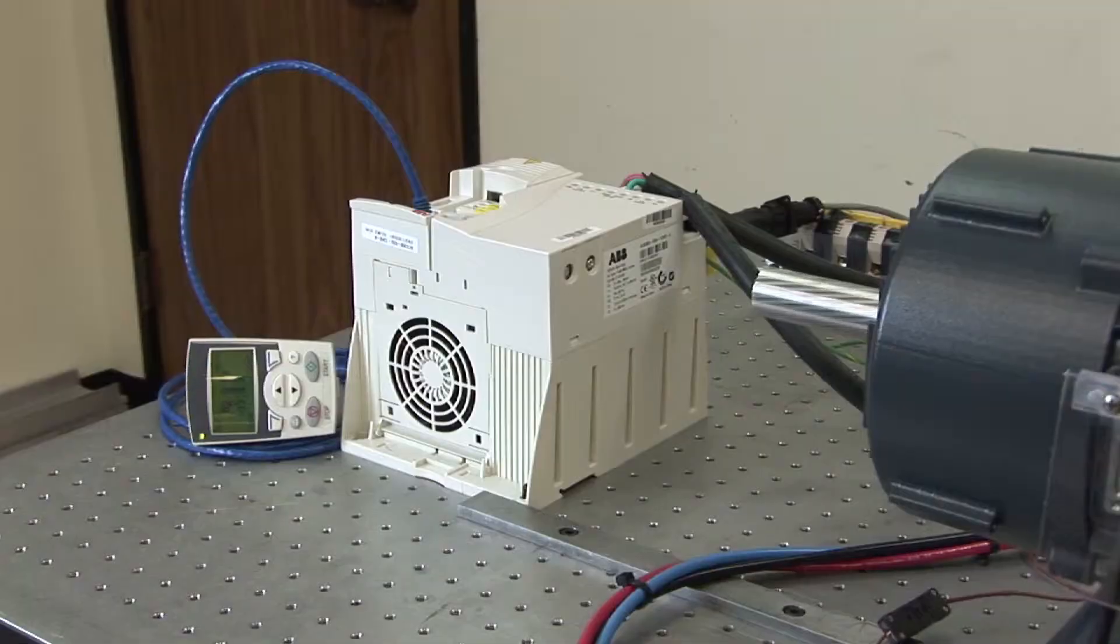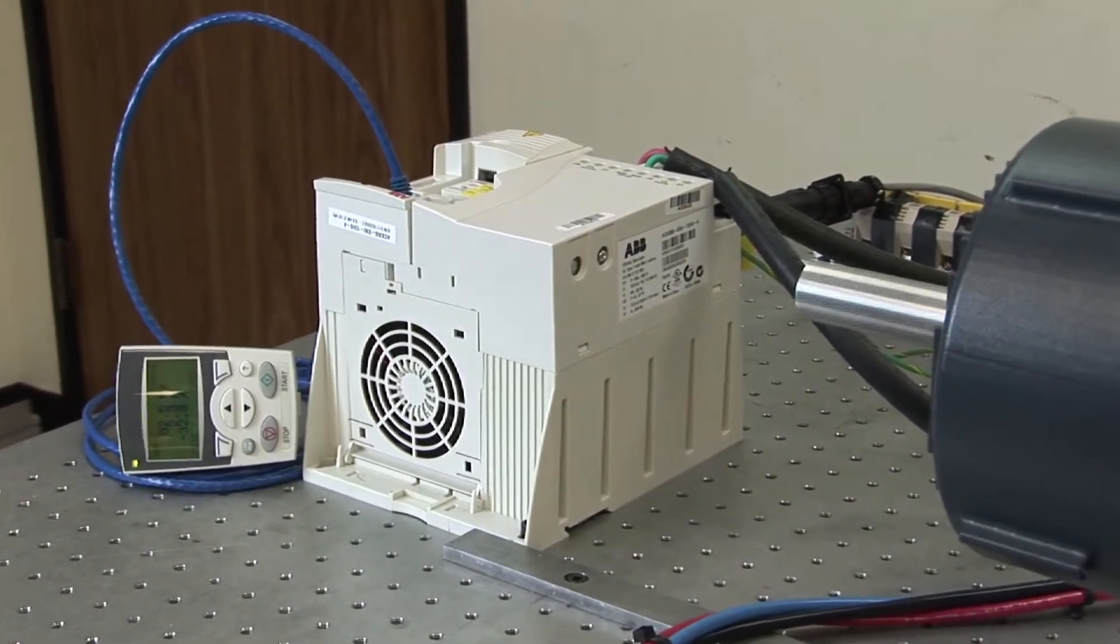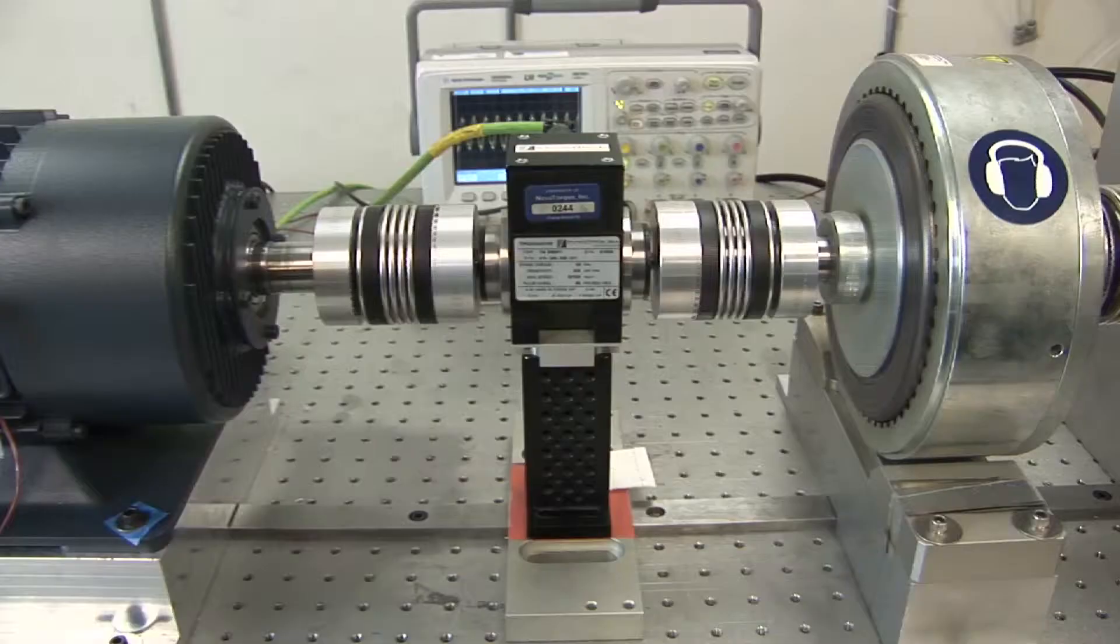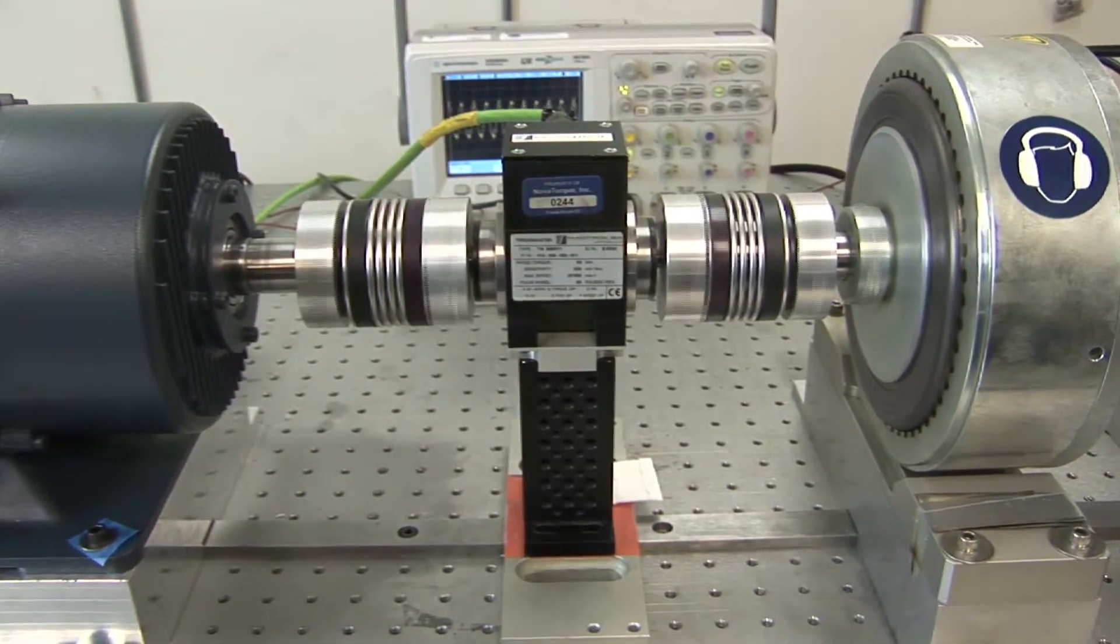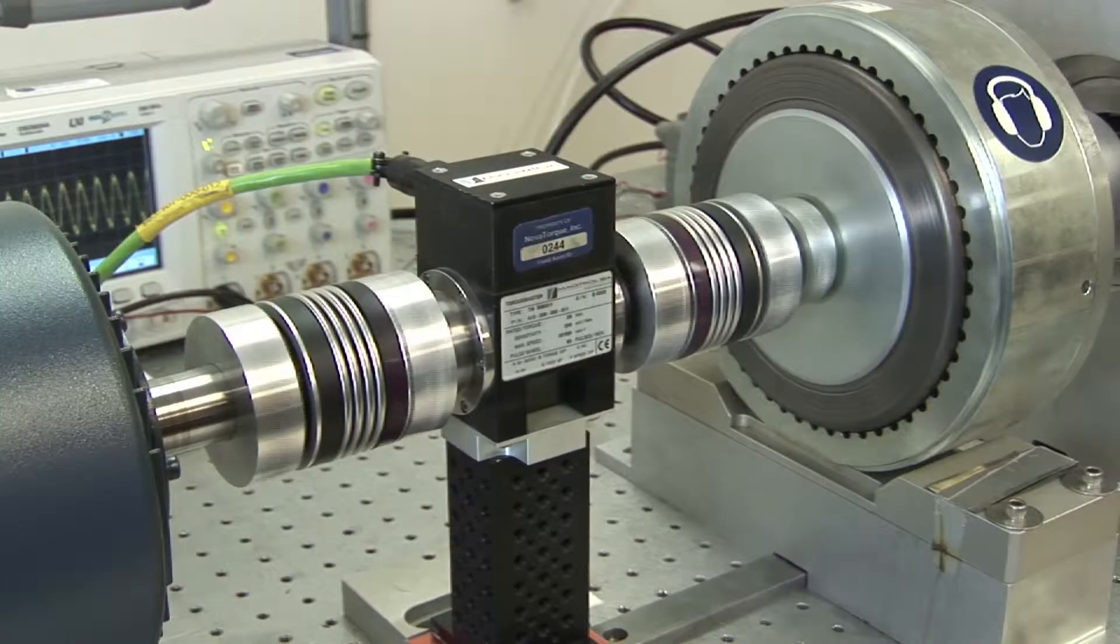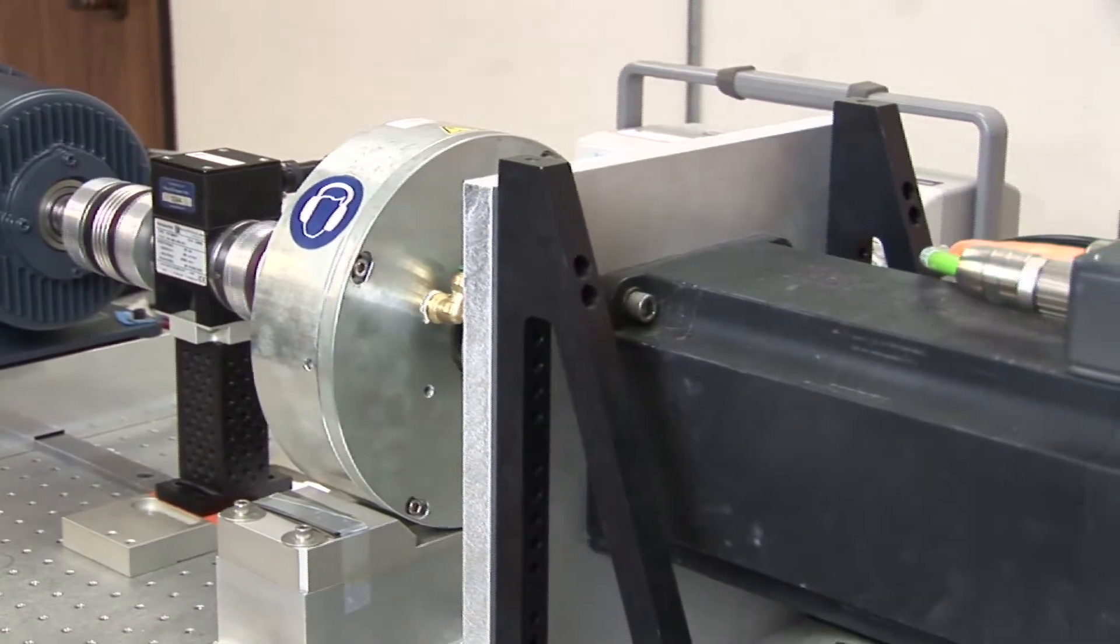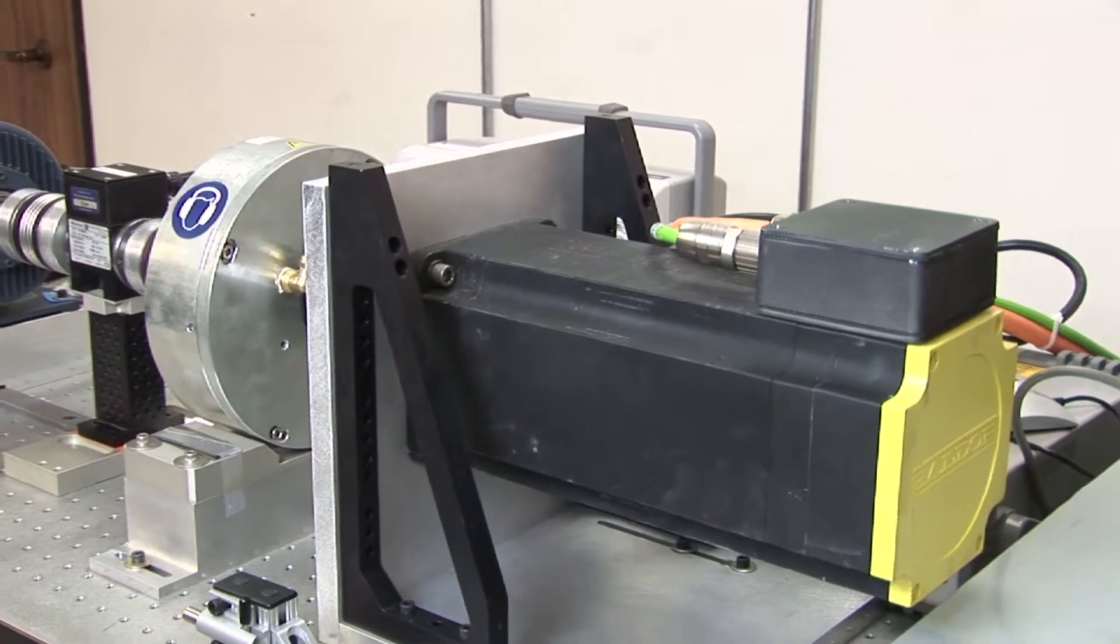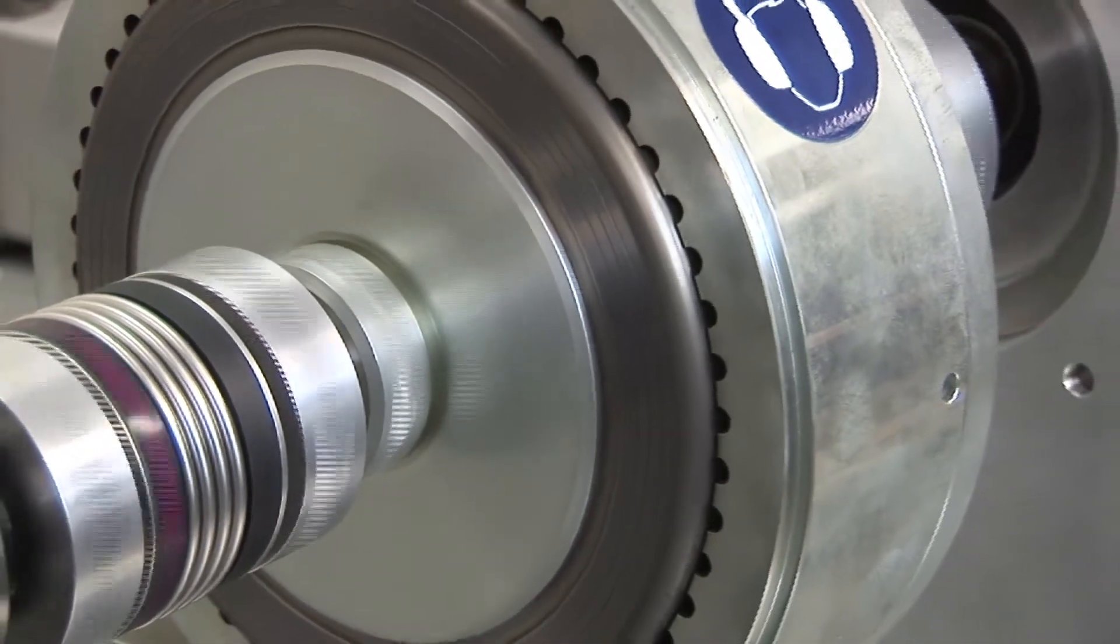The motor is operated using a commercially available variable frequency drive to control the operating speed. In this setup, the motor is driving a rotating torque transducer that measures the torque the motor is delivering, as well as speed. This is a dynamometer which provides the load to the test motor. We also have a hysteresis brake that is currently disengaged, which is used for low speed testing.